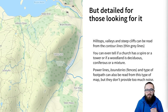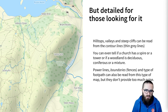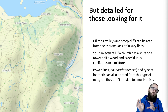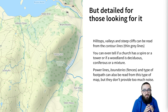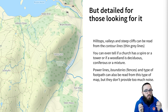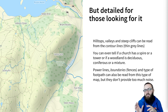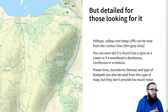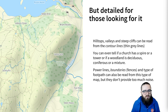But maps are really detailed for those people who are looking for that detail. You can spot hilltops, valleys, steep cliffs — all of these can be read from the contour lines, which on this map are the thin grey lines flowing around each other. You can even tell if a church has a spire or a tower, or if a woodland is deciduous, coniferous, or mixed. You've also got your power lines or fences, and the type of footpath can even be read from this type of map.